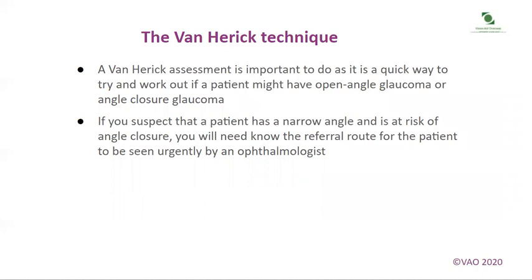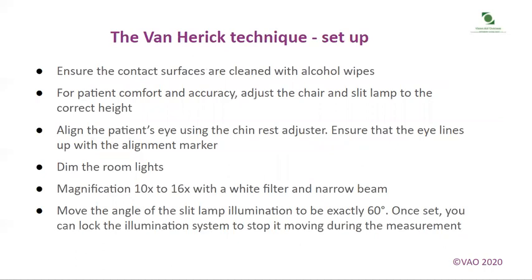A Van Herrick assessment is important as it is a quick way to work out if a patient might have open angle glaucoma or angle closure glaucoma. If you suspect that a patient has a narrow angle and is at risk of angle closure, you will need to know the referral route for the patient to be seen urgently by an ophthalmologist. Ensure the contact surfaces are cleaned with alcohol wipes when setting up. For patient comfort and accuracy, adjust the chair and slit lamp to the correct height.